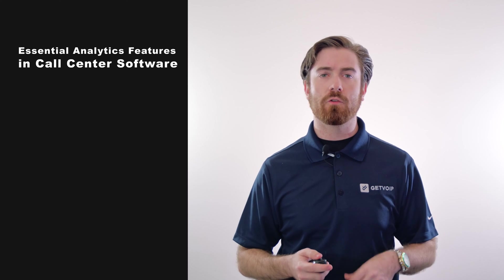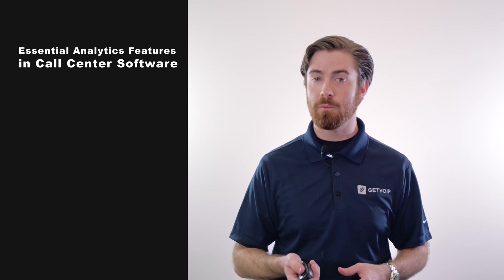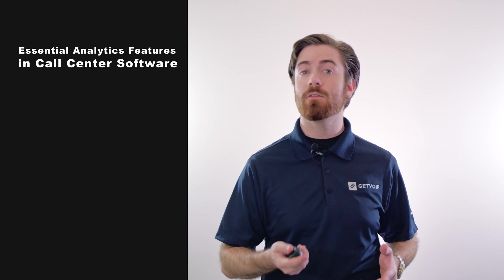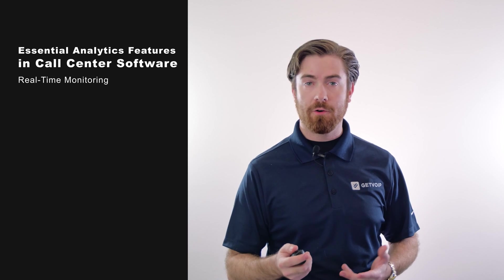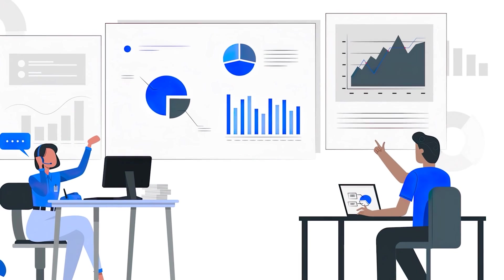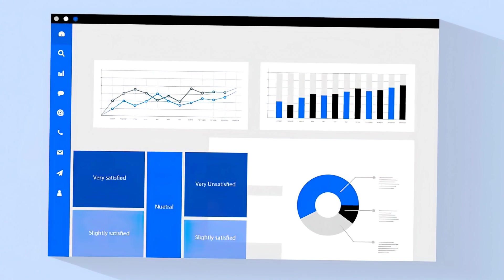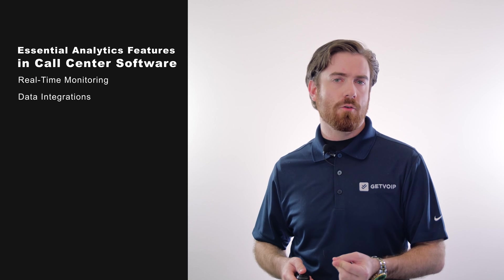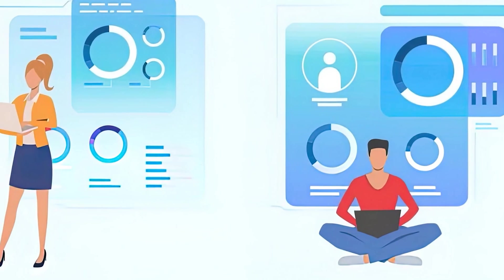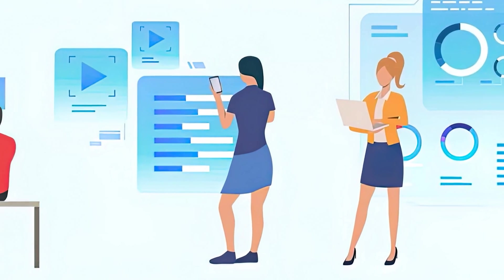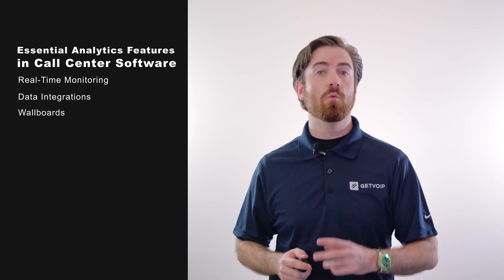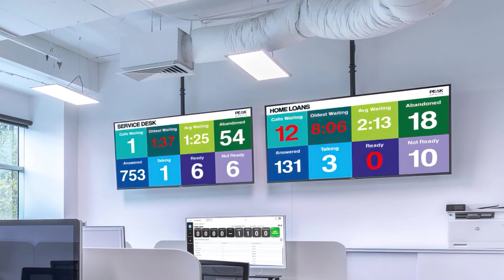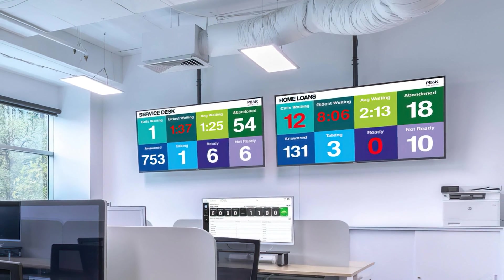Although the most important analytics features depend on your call center and customer needs, the analytics listed below are considered essential for all sizes and types of businesses. First, real-time monitoring, which gives managers a live overview of all the collected data from analytics software, complete with updates in real-time. Next, data integrations, which allow businesses to synchronize their data from various third-party sources. Wallboards present both supervisors and agents with a bird's-eye view of all contact center data and activity in real-time, in one place.